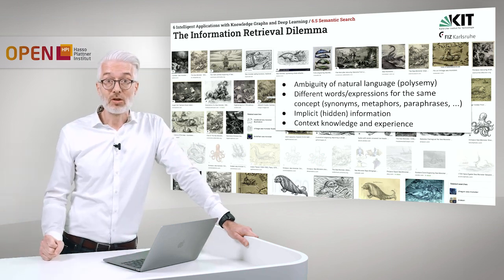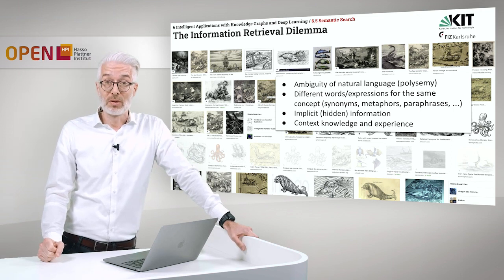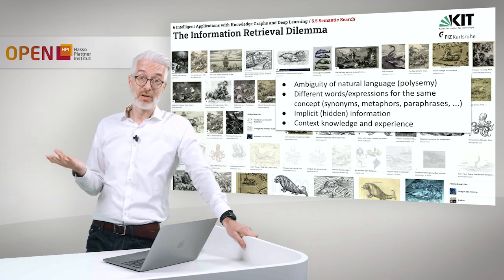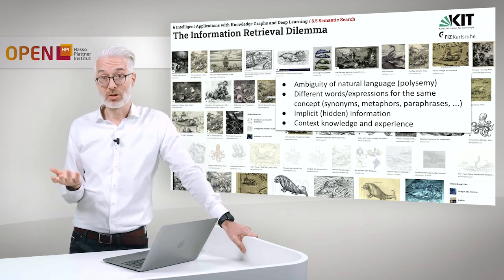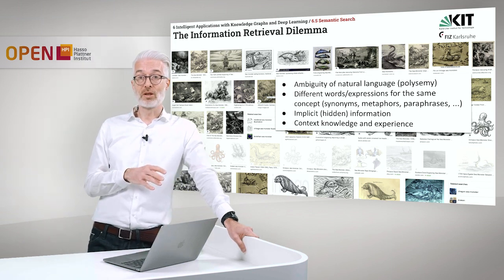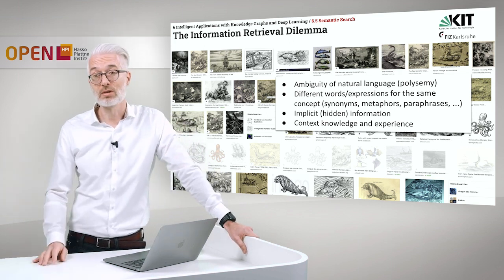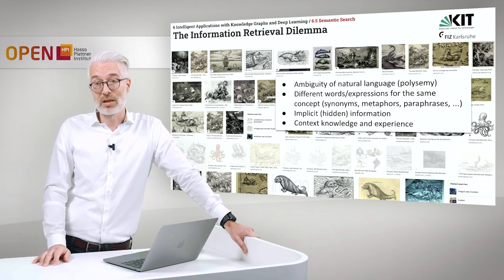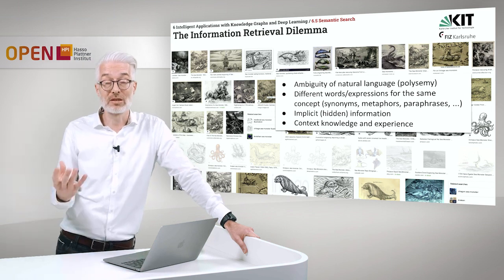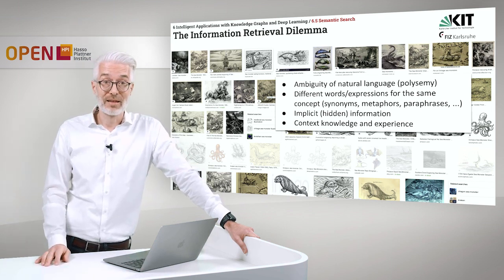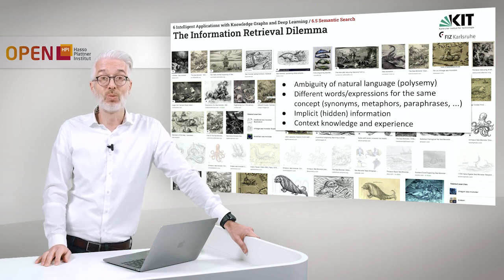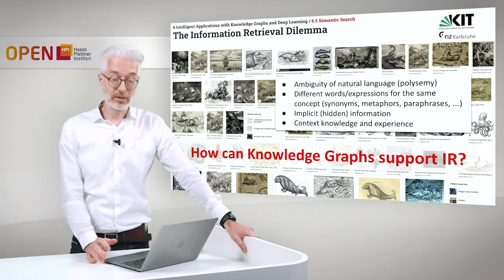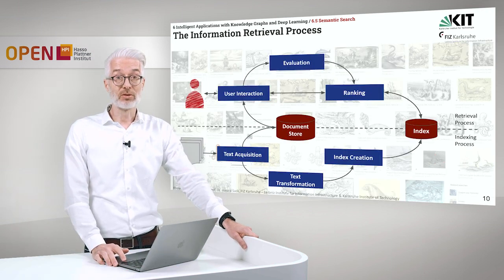Going back to traditional information retrieval — we have already spoken about that. Traditional information retrieval is dependent on natural language, and there we have all the ambiguity of natural language to deal with. We have different words and expressions for the same concepts, so we are dealing with synonyms, metaphors, and paraphrases. We have implicit and hidden information and context information and experiences — it's rather important to find the appropriate answers that the user has in mind when searching for something. Now, let us ask: how can knowledge graphs support information retrieval?